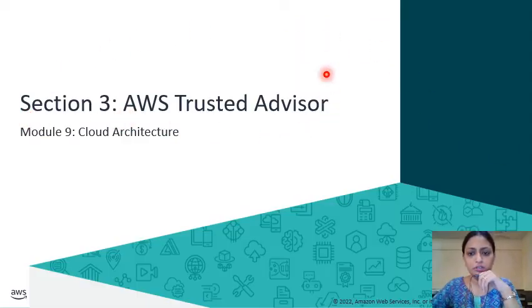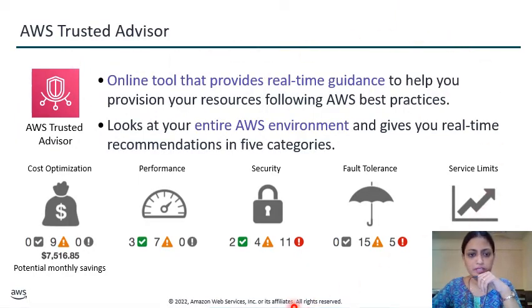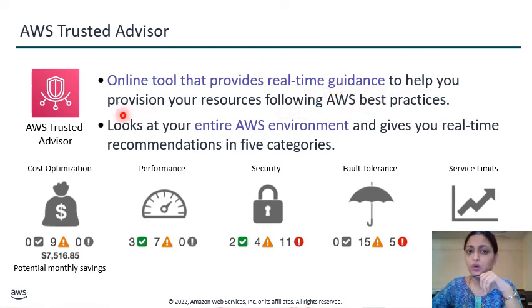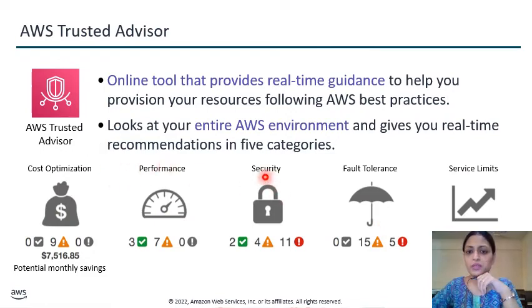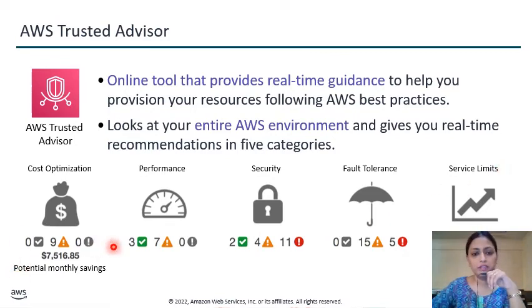Now we have Section 3, all about AWS Trusted Advisor. Basically this is an online tool that provides real-time guidance to help you provision your resources following AWS best practices. It looks at your AWS environment and gives you real-time recommendations in five categories: cost optimization, performance, security, fault tolerance, and service limits, as well as potential monthly savings.